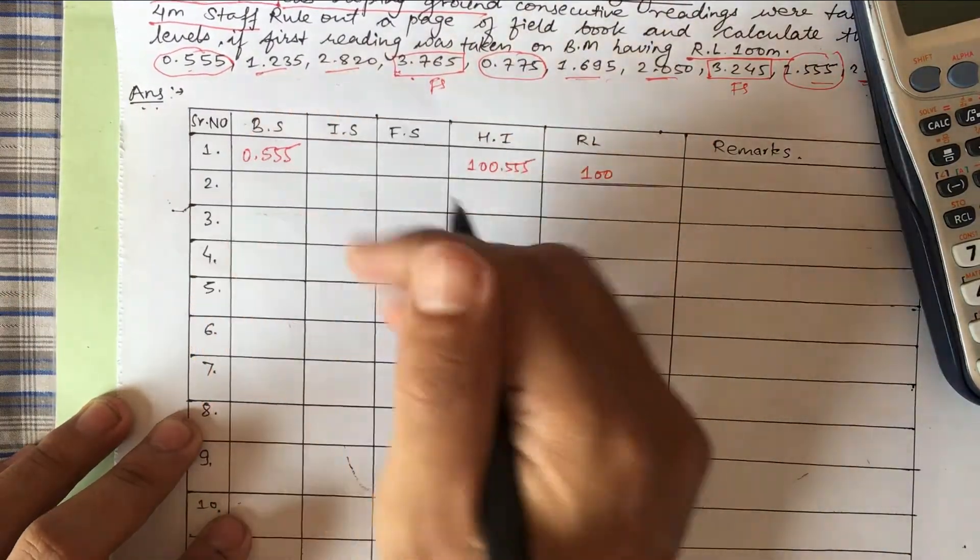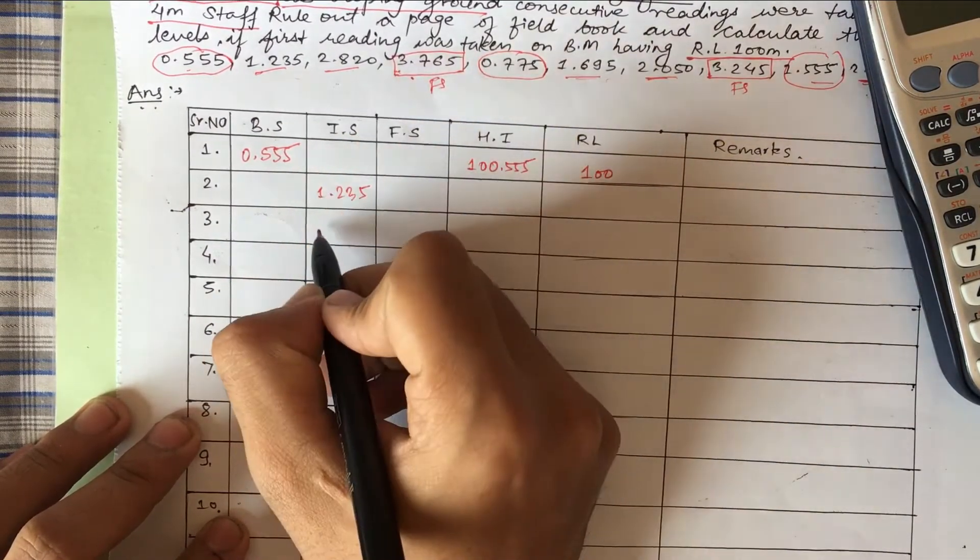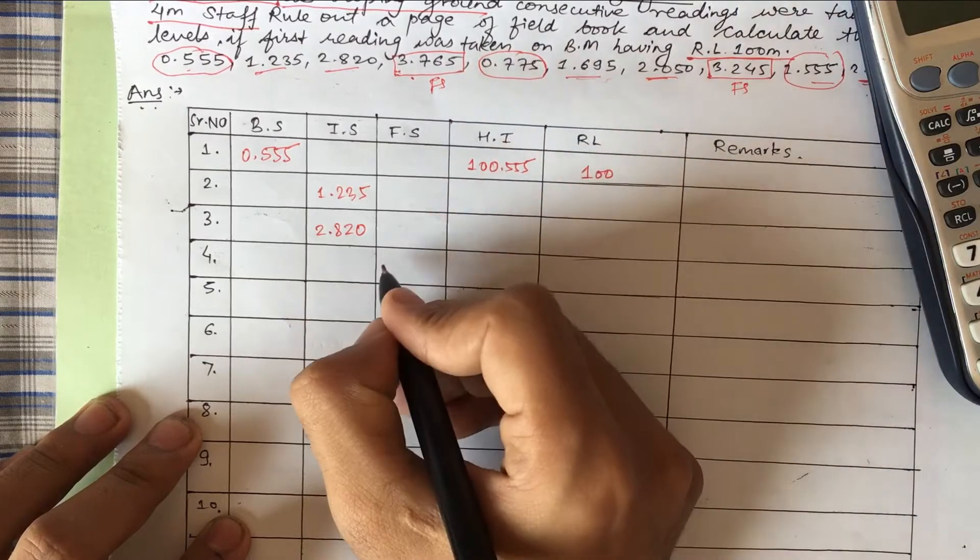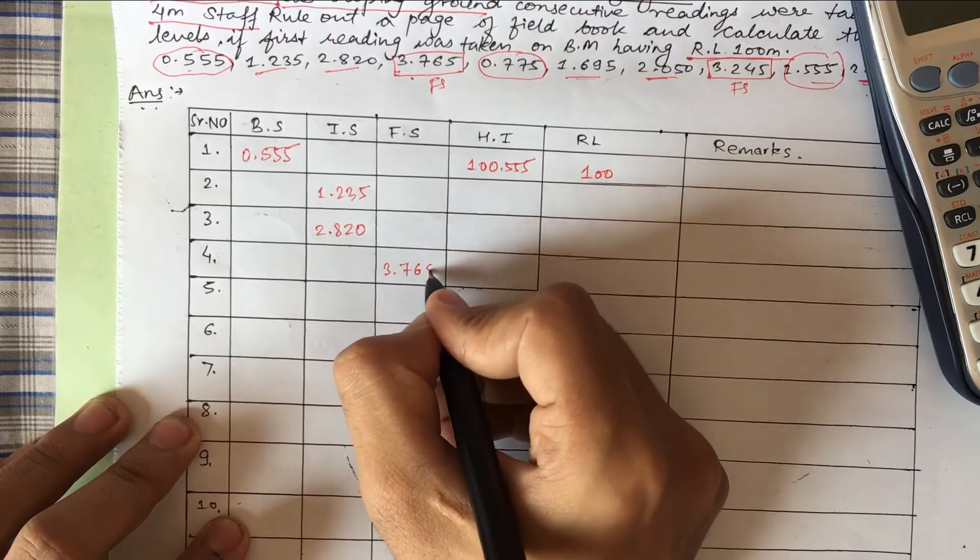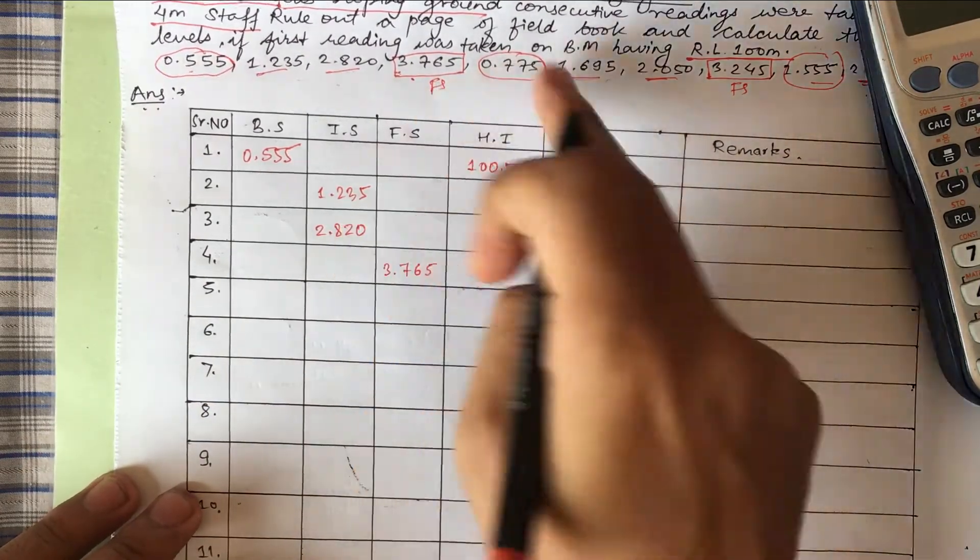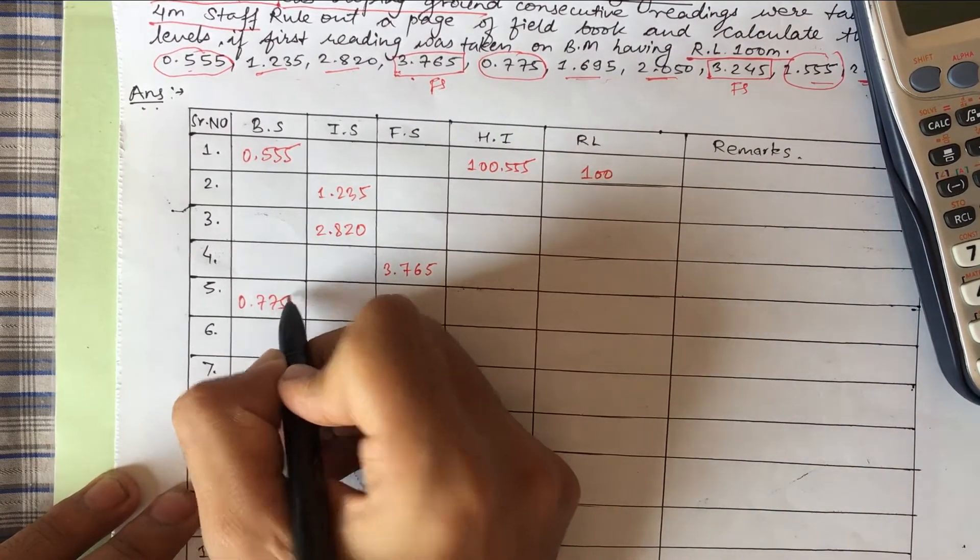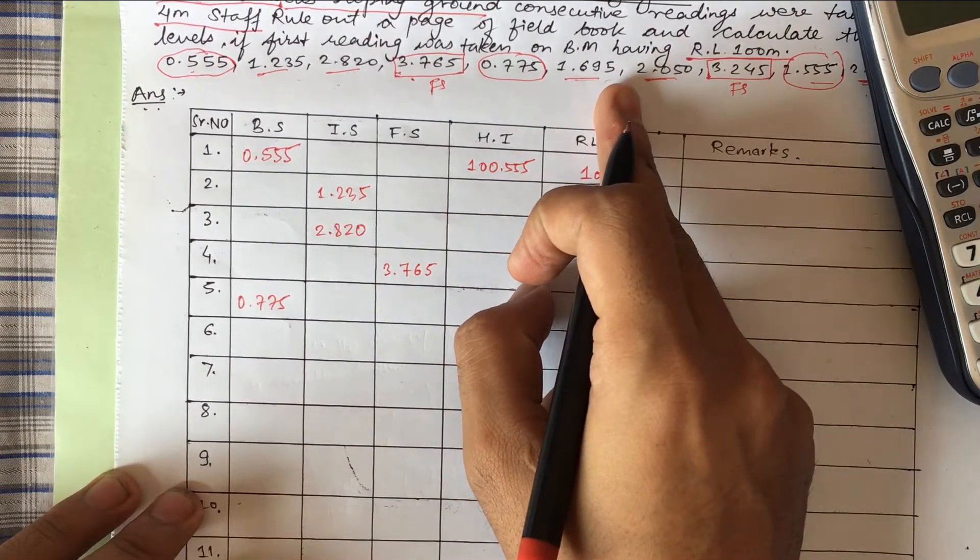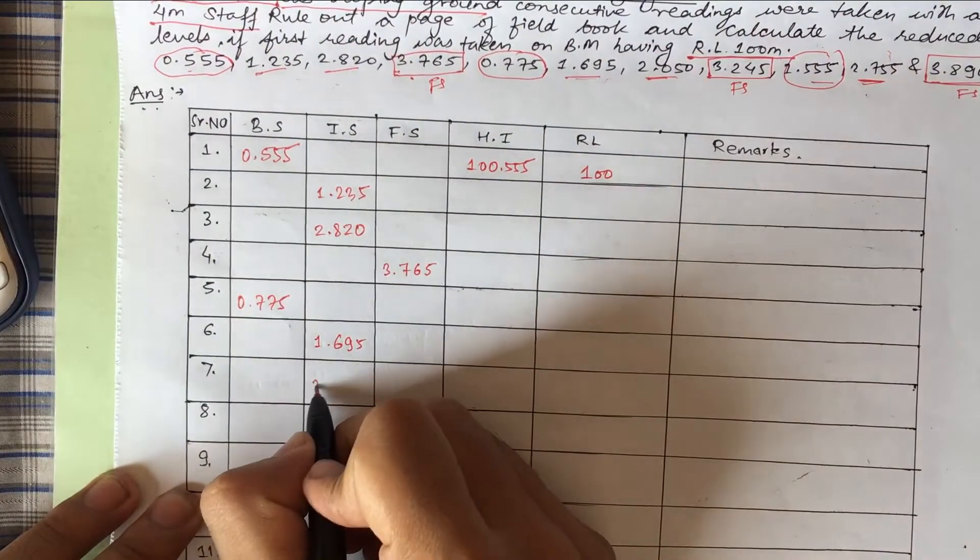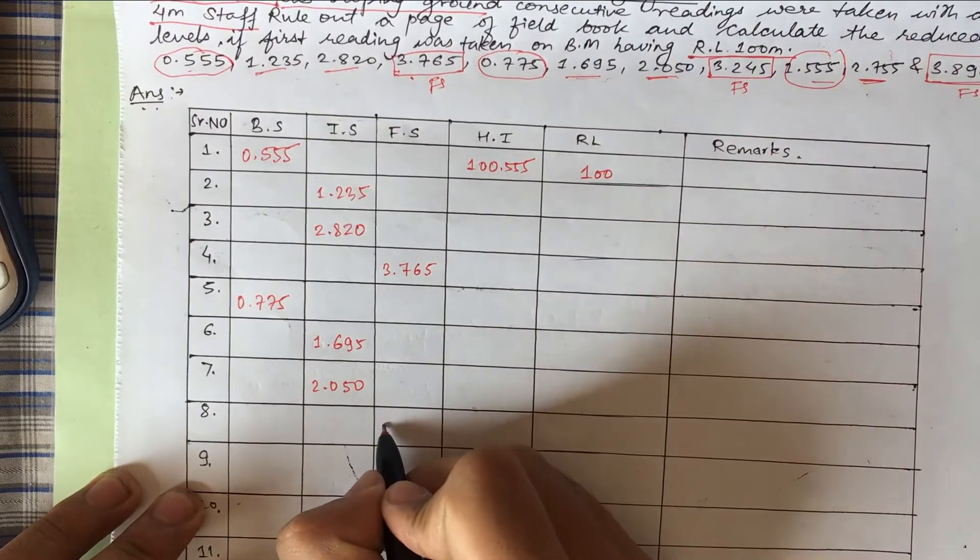Our second point is 1.235, that will be intermediate sight. 2.820 also intermediate. And 3.765, that is foresight. Now 0.775, just after the FS, that will be BS, we'll write here. 1.695 here.